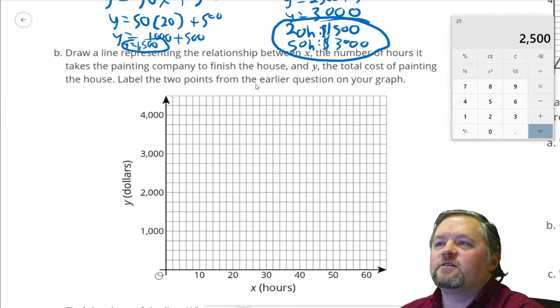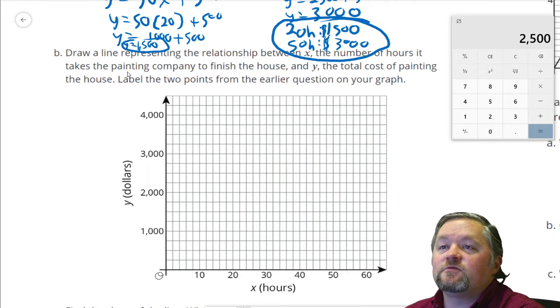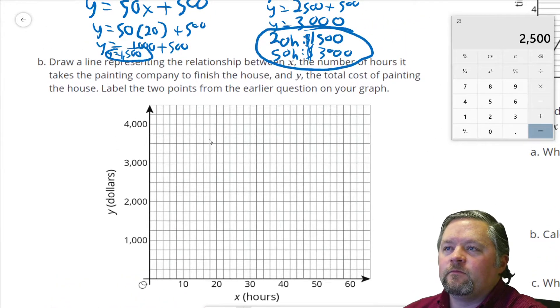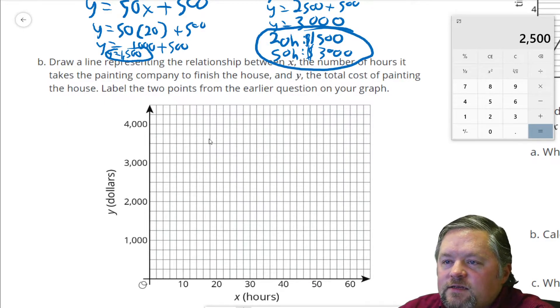Draw a line representing the relationship between x, number of hours it takes the painting company to finish the house, and y, the total cost of painting the house. Okay, we know they charge $500 for supplies.